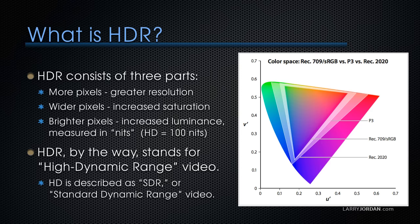Let's start with some basics. HDR, which stands for High Dynamic Range Video, consists of three different parts: more pixels, which are greater resolution — 4K, 5K, 6K, and upward; wider pixels, which means increased saturation, also called wide color gamut media; and brighter pixels, which is increased luminance measured in nits.